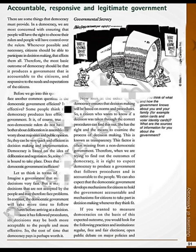But the question arises: we say that in democracy government is accountable, but is the democratic government efficient also? Let's compare decision making in democratic and non-democratic countries. In non-democratic countries, decision making will be quick because non-democratic leaders do not have to bother about discussions, debate in assemblies or parliament, or worry about majorities and public opinion. They can be very quick and efficient in decision making and implementation. But democracy is based on discussion and consultation, so some delay is bound to take place. Many institutions need to be consulted before arriving at the final decision — so does that make democratic government inefficient?